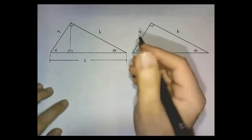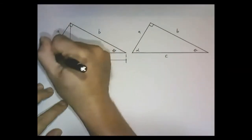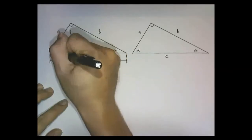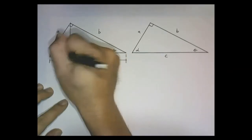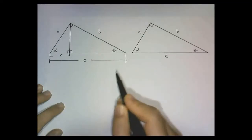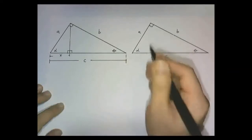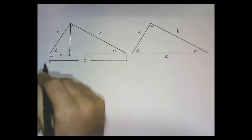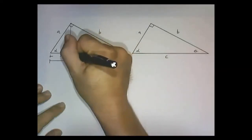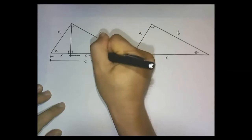The distance from here to here I'm going to call x. If the length of this entire side is c, then this distance here is c minus x. So: x, c, and this is c minus x. I'm going to write that in — c minus x.